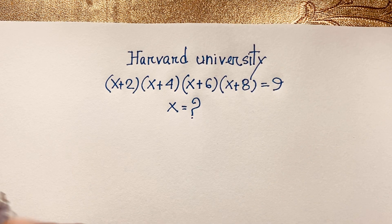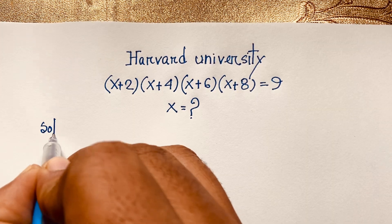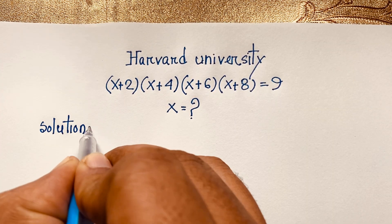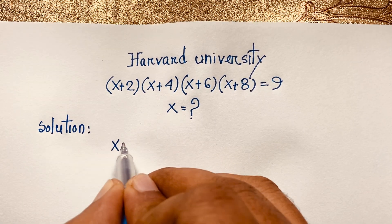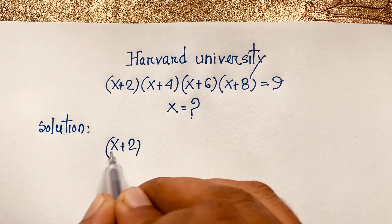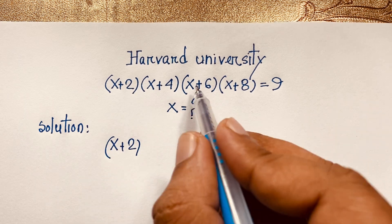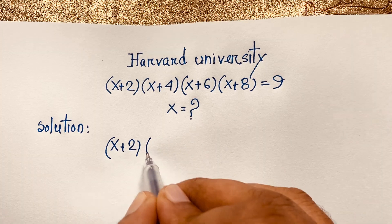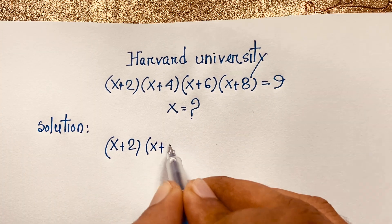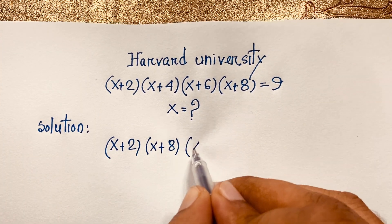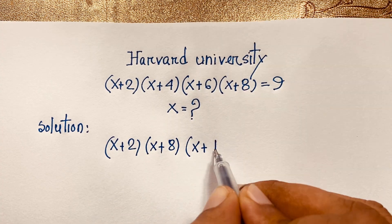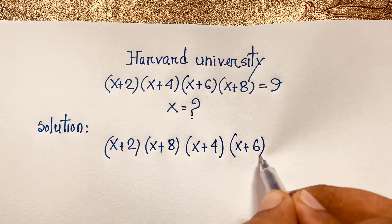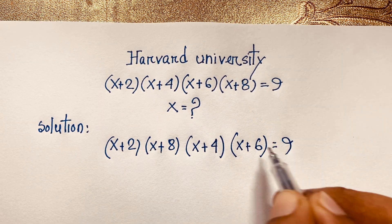How to solve this interesting math problem? I solve this step by step. I take x+2 and pair it with x+8, then x+4 and x+6 equals 9. I just changed the arrangement of the factors.